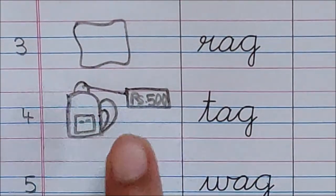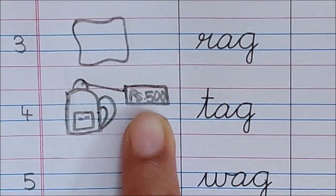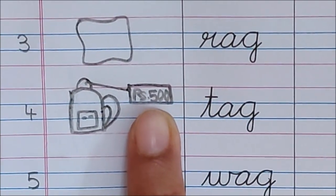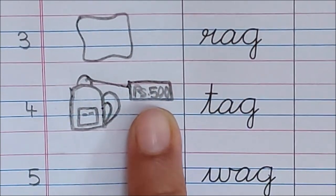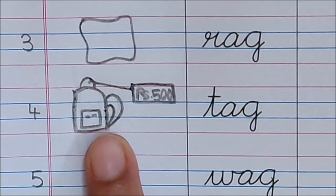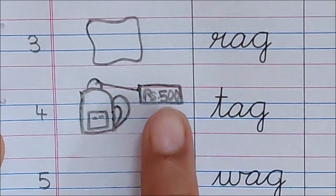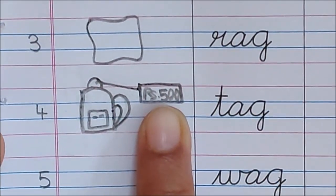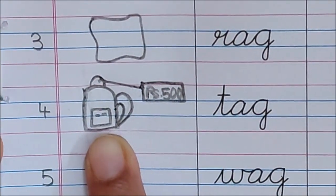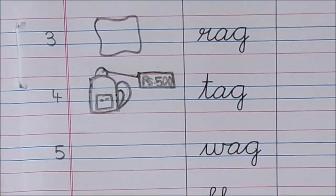She checked the tag on the bag. On the tag is written rupees five hundred. So, mama got to know the price of this bag by checking the tag. She paid five hundred rupees to the shopkeeper uncle and she bought this bag for you. A tag is on a bag. Now, let us read the next word.